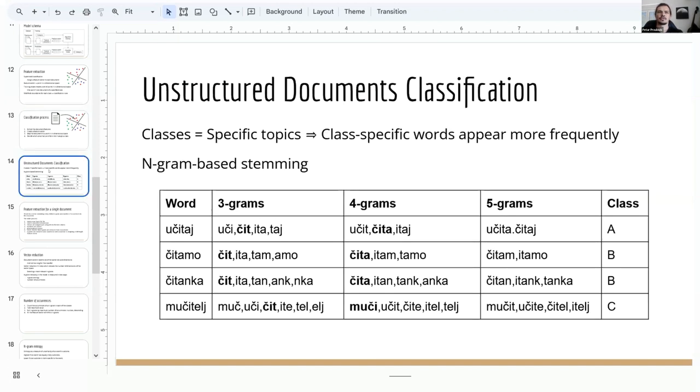In unstructured documents, classes can be considered as specific topics, and it is reasonable to expect specific words to appear more frequently in some of the classes. Appearance of a word specific to some class in a document makes that document a bit more biased toward the class. Words can be in various forms, and to properly identify a word we need some kind of stemming, and here is where the previously mentioned n-gram stemming is applied.